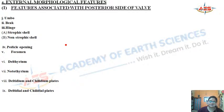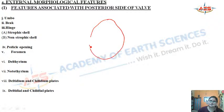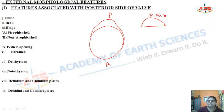Moving to external morphological features: first we have features associated with the posterior side of the valve. The brachiopod is hinged along the posterior side — the two shells are connected along the posterior margin and they open along the anterior side.